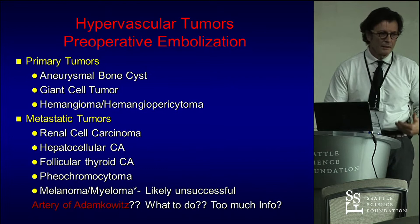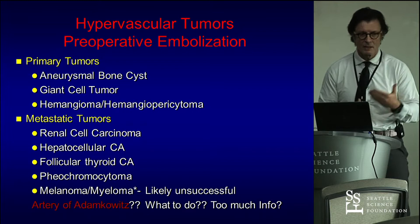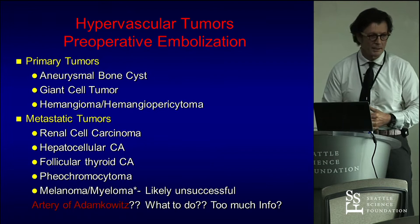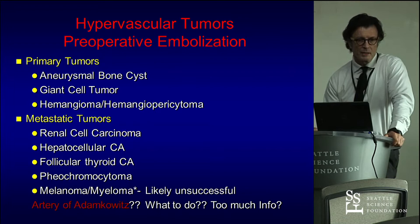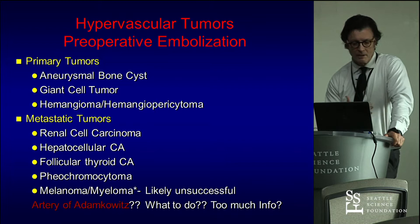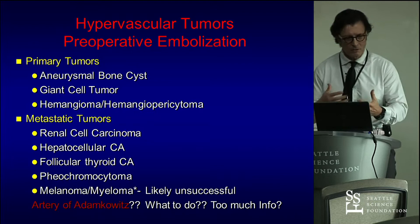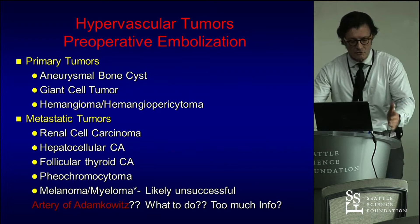Hypervascular tumors are a major concern. Part of the issue about biopsying and making a diagnosis is that a lot of these tumors bleed heavily as soon as you get into them. Some tumors bleed more, some less. If you think about a renal met, which tends to be very vascular, you may want to consider preoperative embolization. Knowing what you're dealing with is critical. As surgeons, there's nothing more frustrating than dealing with nonstop bleeding — you can't see, and you're just controlling hemorrhage. Anything you can do upfront to minimize it, including preoperative embolization, would be very helpful.